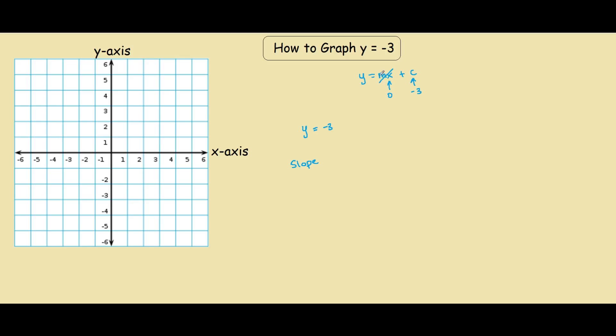So say if m was like 2, for example if m was 2, we go horizontal 1, up... But in this case, the slope is zero.